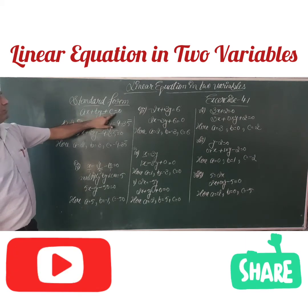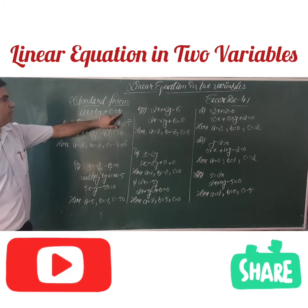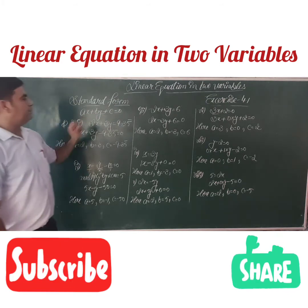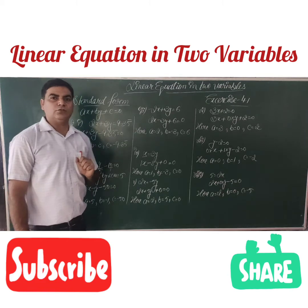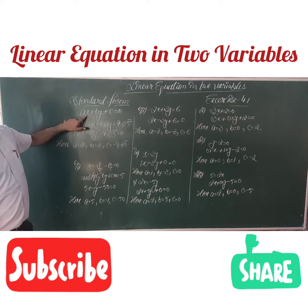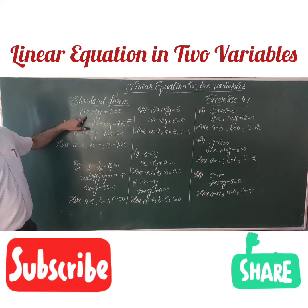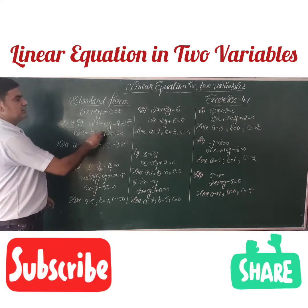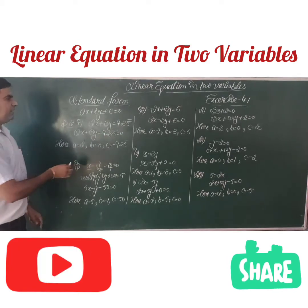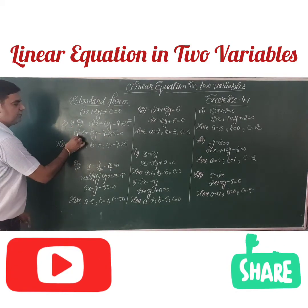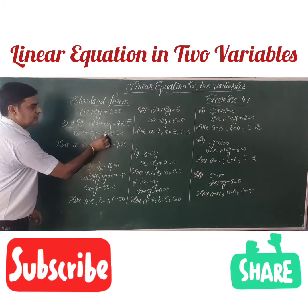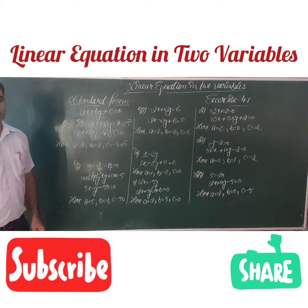The standard form is ax plus by plus c equals 0. The first requirement is that the coefficients a, b, and c must be constants — not fractions. The second requirement is that the leading term x must have a positive coefficient. On comparing the first sub-part with the standard form, a is the coefficient of x which is 2, b is the coefficient of y which is 3, and c is the constant term which is minus 9.3.